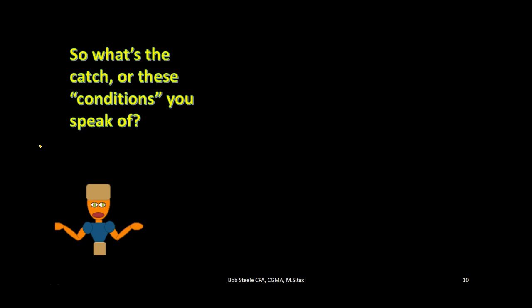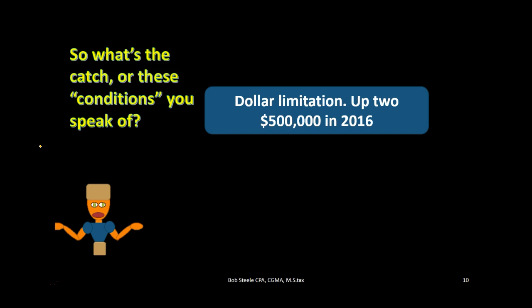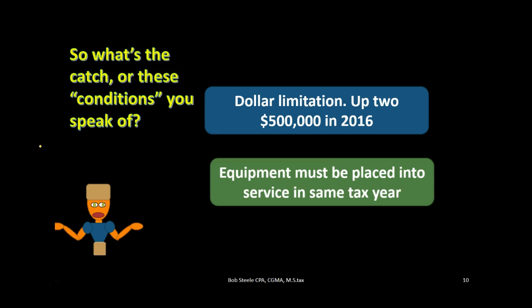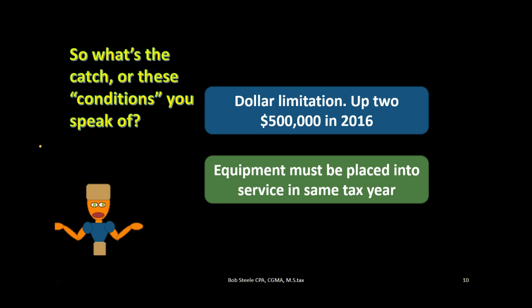So what are the conditions? There is a dollar limitation — in 2016 the limit was $500,000, and you'll want to check the current year's limit. The equipment must also be placed in service in the same tax year, so you can't buy a bunch of equipment at year-end without actually putting it into use. You also want to check which types of equipment qualify. Most computer equipment and most types of equipment qualify for the 179 deduction, and it's pretty wide open for a lot of things.